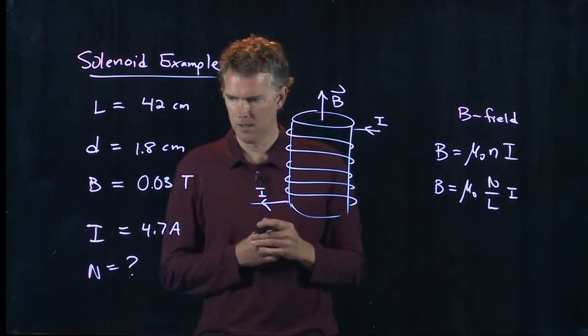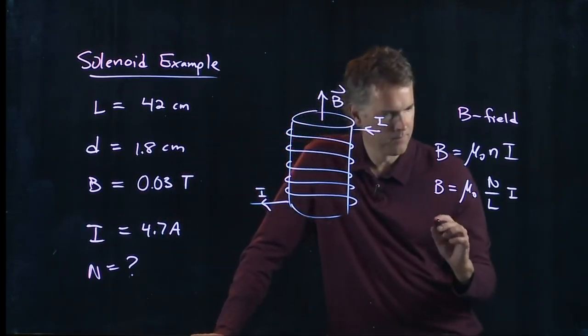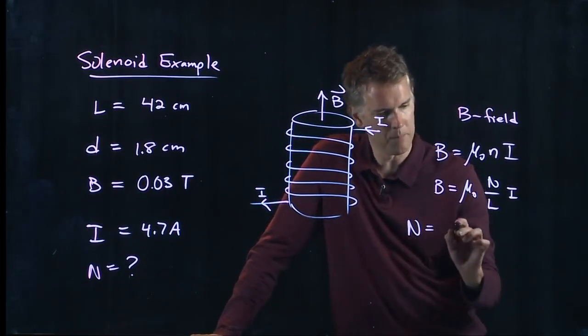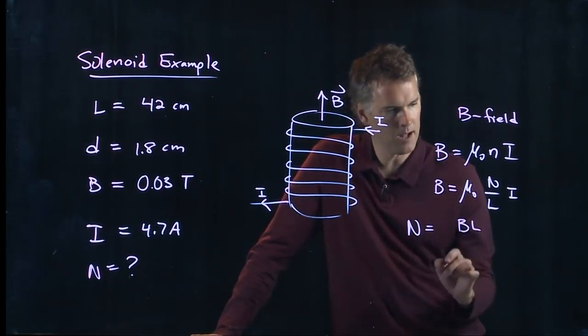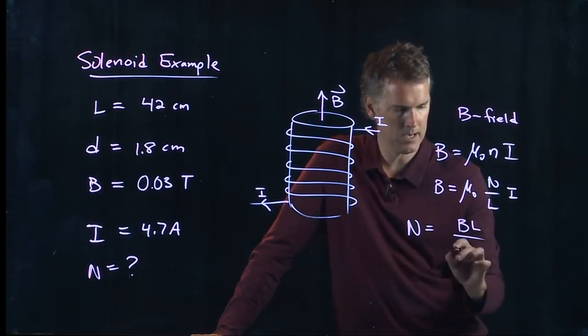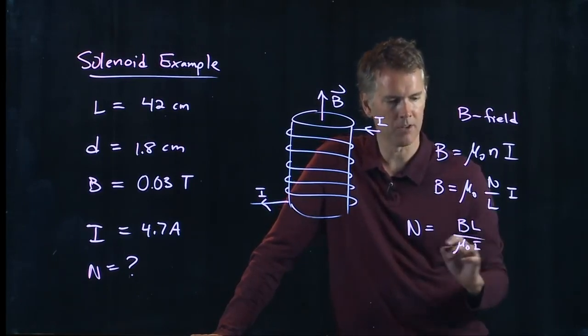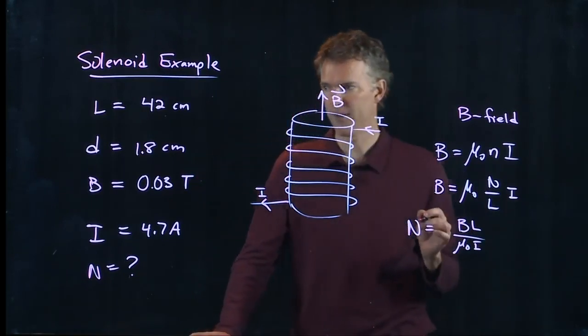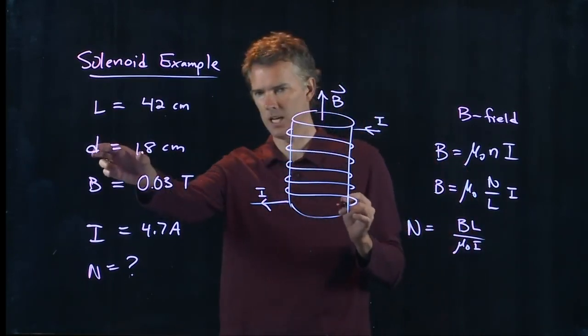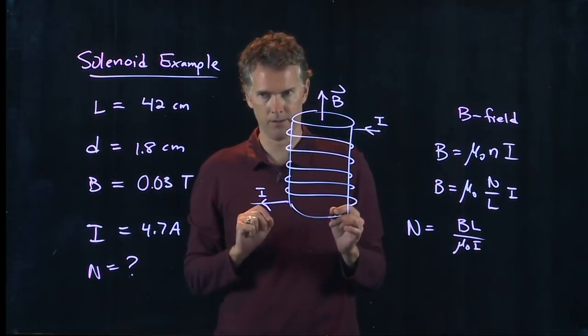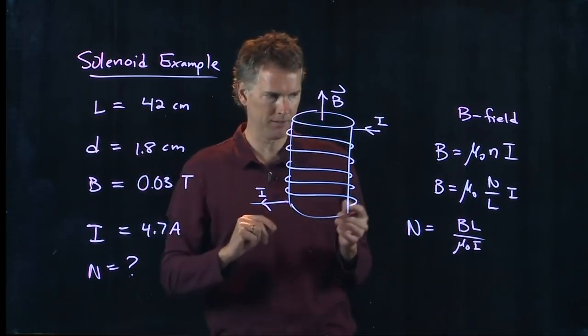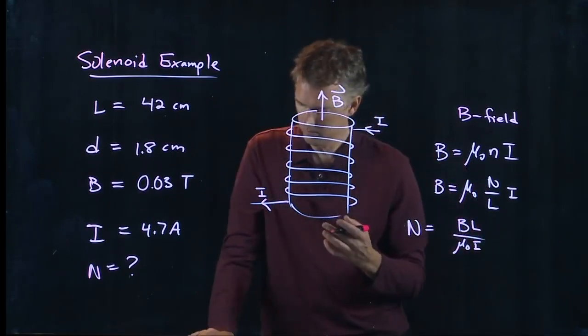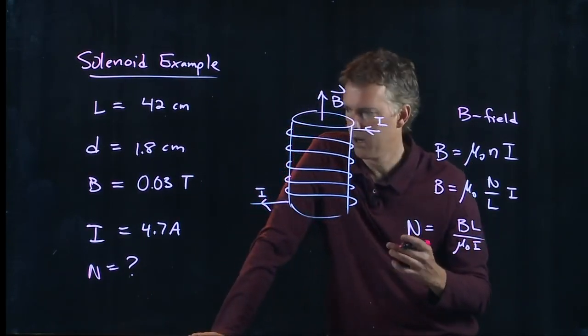It seems like we have just about everything we need to calculate n. Let's just solve it from this equation - n is going to be B times L divided by μ₀ times I. In fact we don't even need the diameter here, that diameter d is not in our equation.